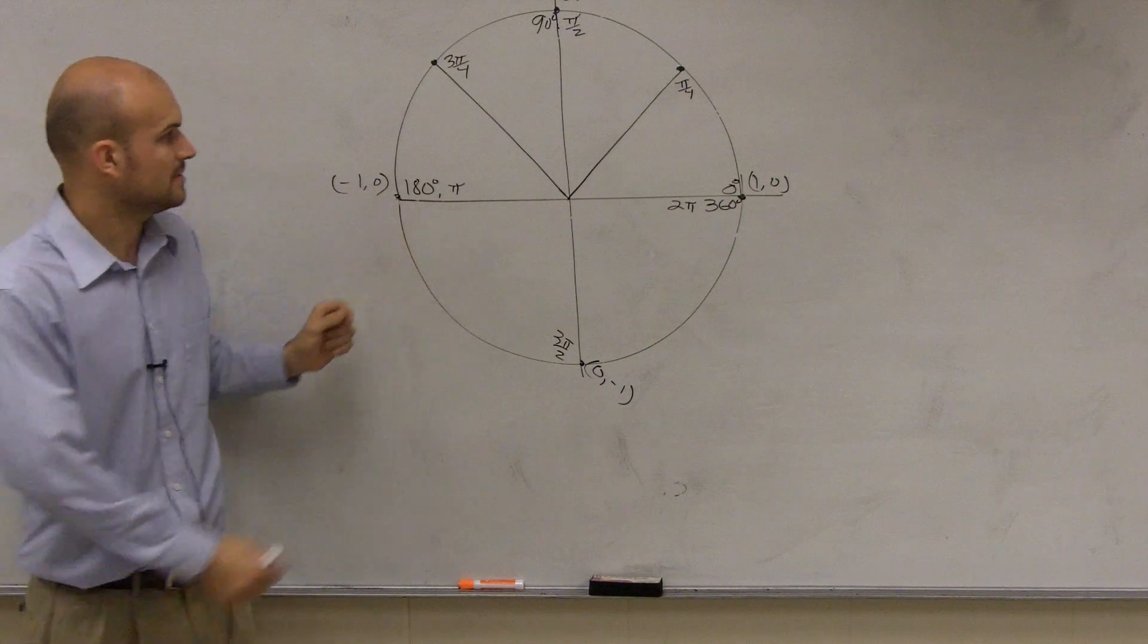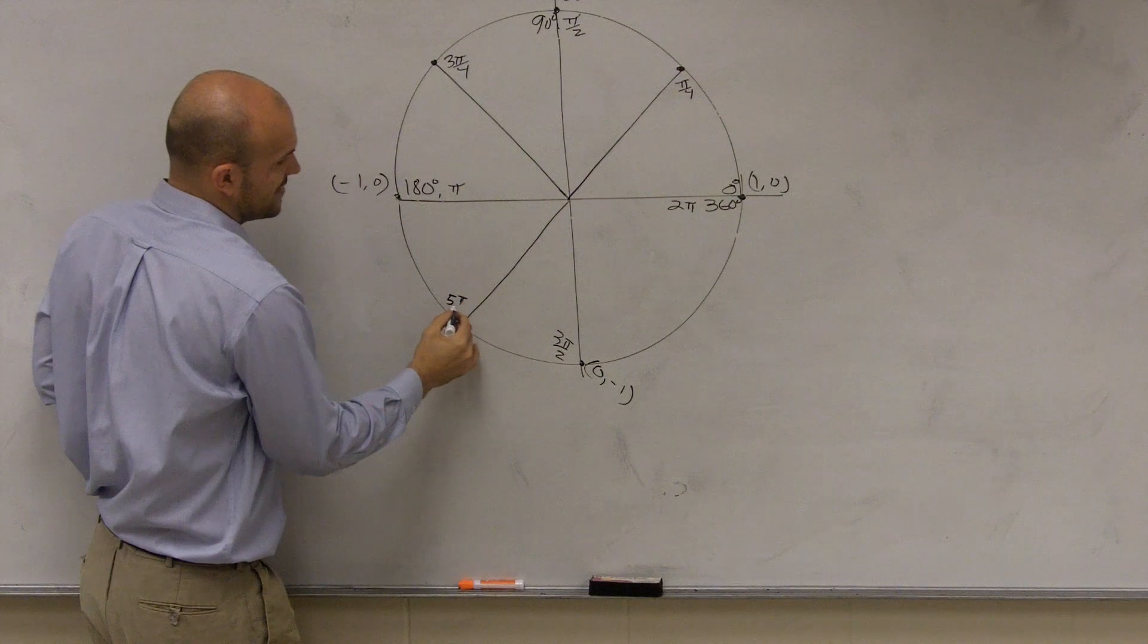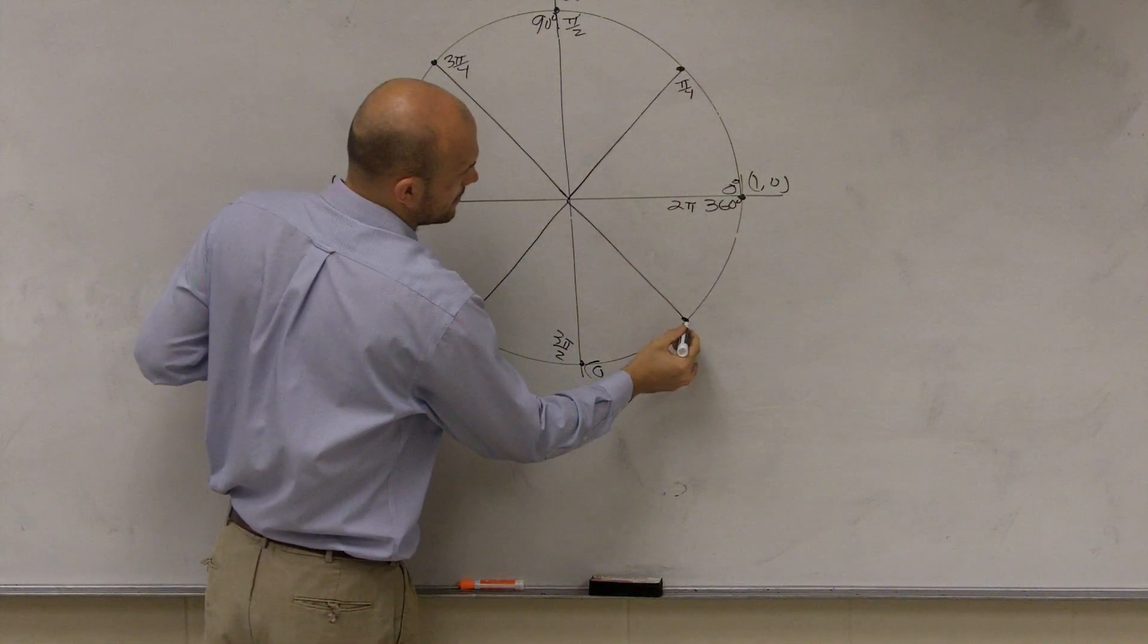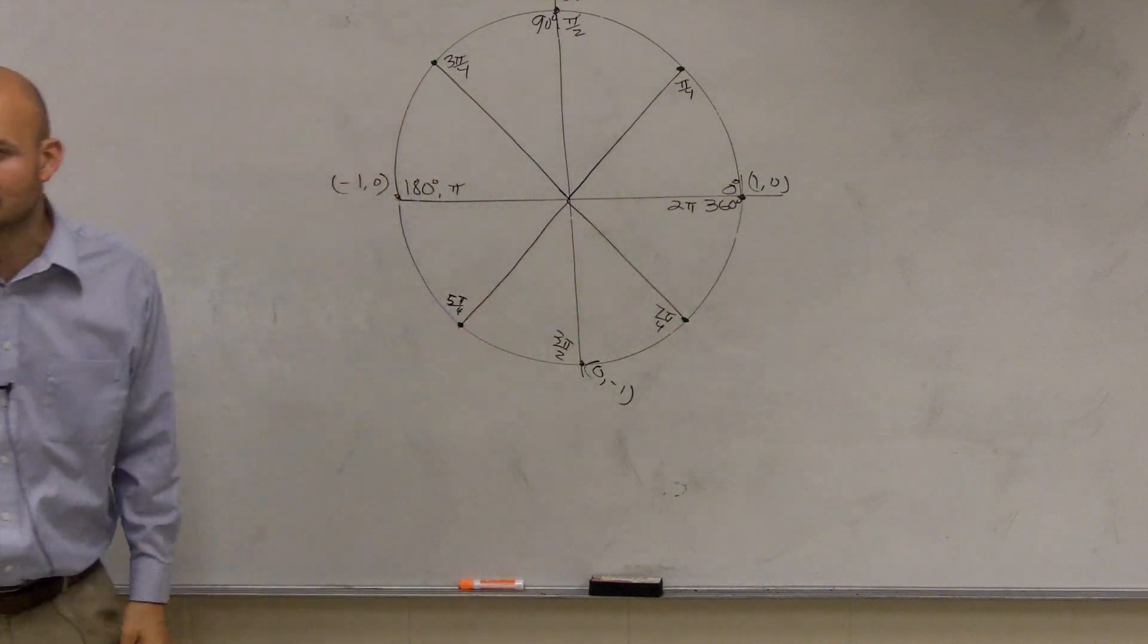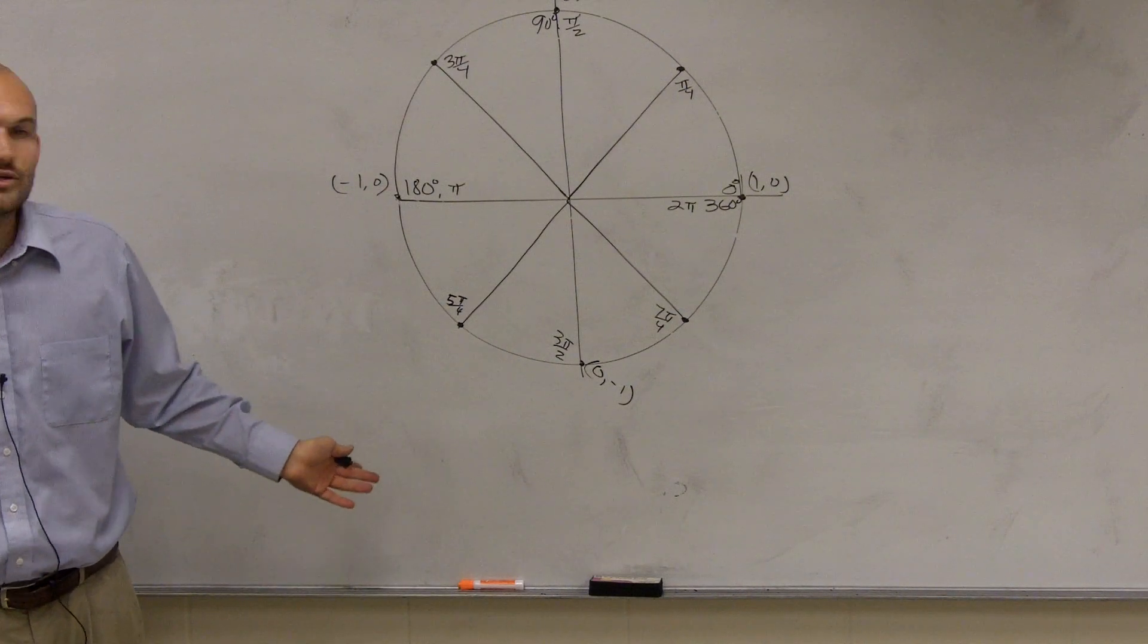4 pi over 4, so then halfway is going to be 5 pi over 4, 6 pi over 4, 7 pi over 4, 8 pi over 4. 8 pi over 4 is the same thing as 2 pi. So we got the pis done. Now let's kind of do the angles.